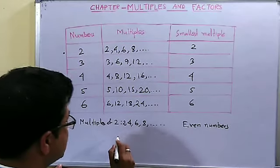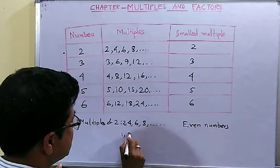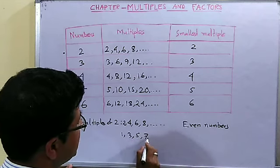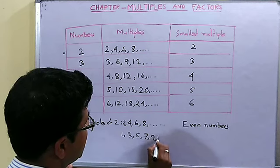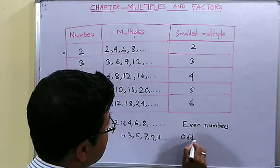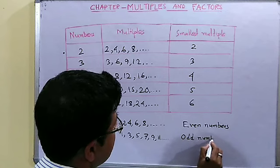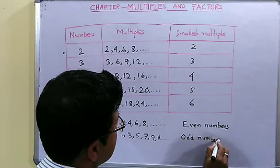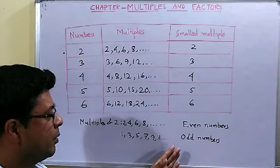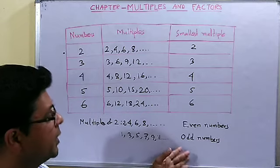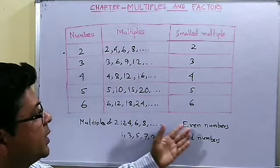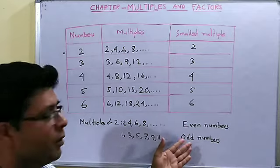And the numbers which are not multiples of 2 are called odd numbers. So what are the odd numbers? 1, 3, 5, 7, 9, 11 — like these are odd numbers. So we have now understood what are even numbers and what are odd numbers, and also what are multiples.